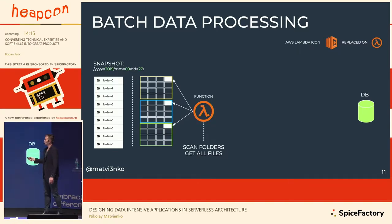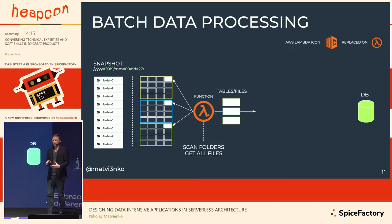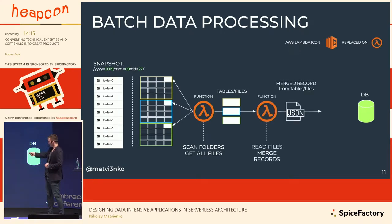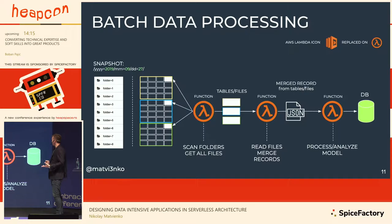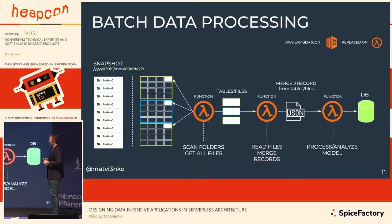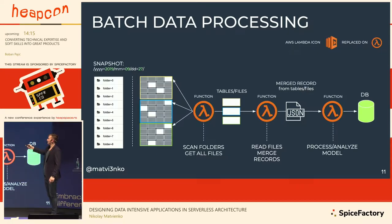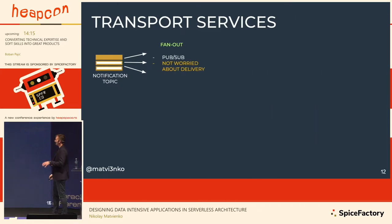We need a Lambda function that will scan the whole bucket folders for files. After that it will combine a message with the path to those files. We need another Lambda to read those files, merge records, and produce a model. Then we need to process and analyze that model to collect it to the database. To make a minimalistic pipeline for a data lake we need at least three Lambda functions, then services to transport the data step by step.